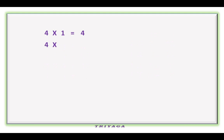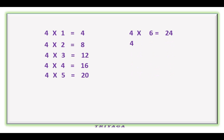4 1s are 4, 4 2s are 8, 4 3s are 12, 4 4s are 16, 4 5s are 20, 4 6s are 24, 4 7s are 28, 4 8s are 32, 4 9s are 36, 4 10s are 40.